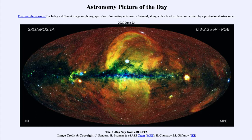X-rays are just like visible light except much more energetic — very high energy — but they're also a form of electromagnetic radiation, just like visible light. Because they're such higher energy, they trace some of the higher energy processes. So when we look at the sky, our image today is a full sky view taken by the x-ray satellite, and what we notice is that it doesn't look very familiar to us.